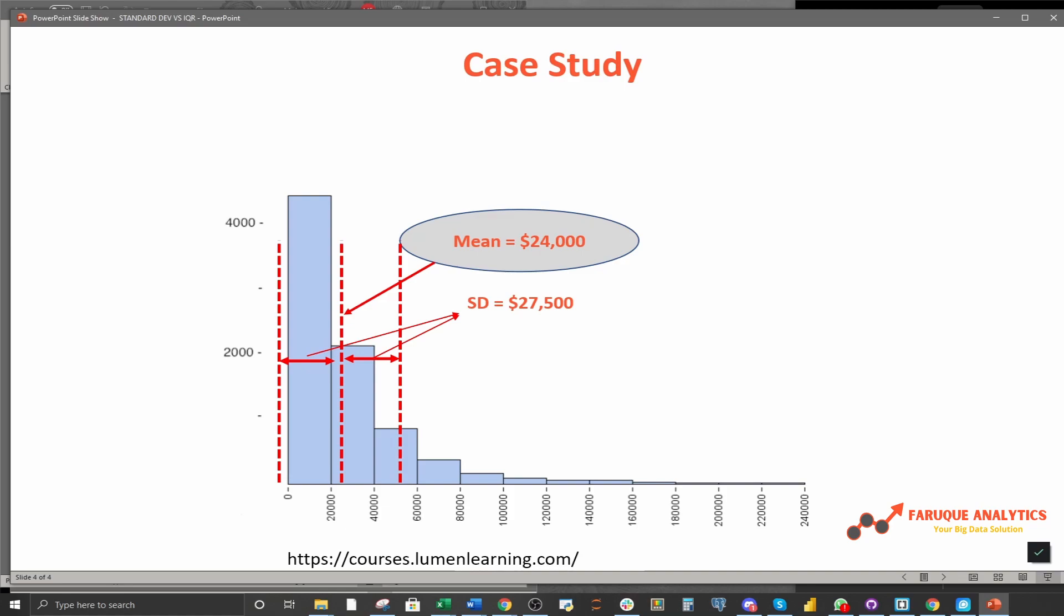However, you can see that if you subtract the 27 from the 24, which is your mean, you will end up with a negative number, which doesn't really make sense in real life. So this is one of the shortcomings of applying standard deviation to data sets that are not closer to symmetrical in shape.